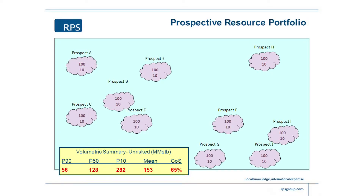The key number there in this case, because I've assumed that these are independent, is that the chance of making at least one discovery with this 10-well program is 65%.